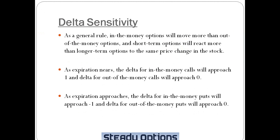Delta sensitivity. As a general rule, in the money options will move more than out of the money options, and short term options will react more than longer term options to the same price change in the stock. As expiration nears, the Delta for in the money calls will approach 1 and Delta for out of the money calls will approach 0. At expiration, options can be either in the money or out of the money — in the money options will have a Delta of 1 and out of the money options will have a Delta of 0. The same applies for puts: as expiration approaches, the Delta for in the money puts will approach minus 1 and Delta for out of the money puts will approach 0.